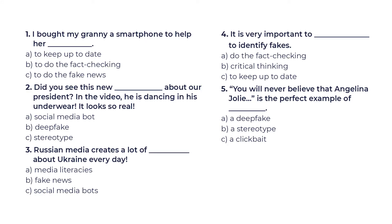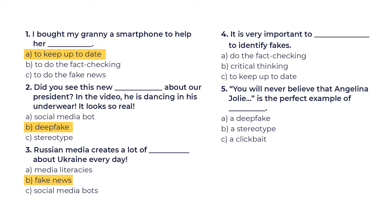I guess it's time for practice. There is a task on the screen. Pause the video and choose the correct option. Are you ready? Let's check it. 1. I bought my granny a smartphone to help her — A. to keep up to date. 2. Did you see this new — B. deep fake about our president? In the video he is dancing in his underwear. It looks so real. 3. Russian media creates a lot of — B. fake news about Ukraine every day. 4. It is very important to — A. do the fact-checking to identify fakes. 5. You will never believe that Angelina Jolie is the perfect example of — C. a clickbait. Good job!